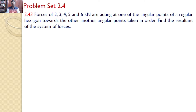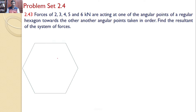Forces of 2, 3, 4, 5 and 6 kilonewtons are acting at one of the angular points of a regular hexagon towards the other angular points taken in order. Find the resultant of the system of forces.